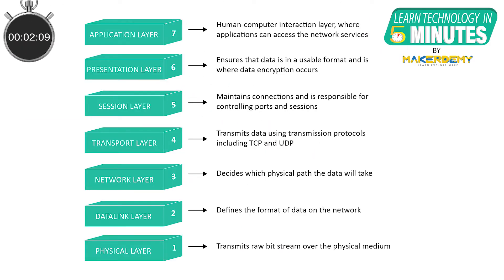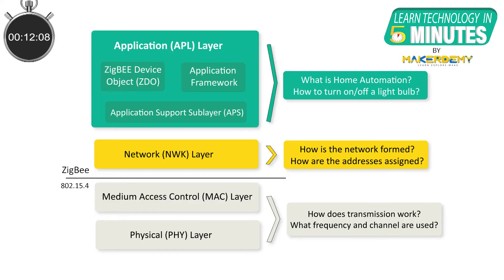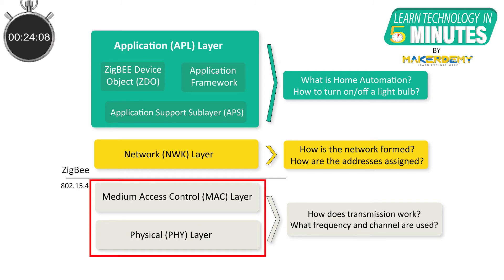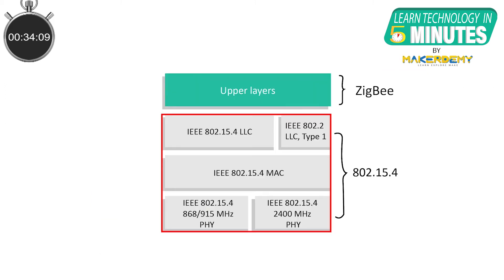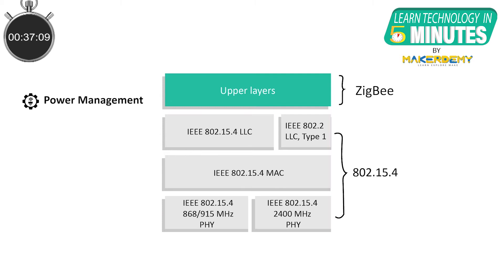Most of the network protocols use the concept of layers to separate different components and functions into independent modules that can be assembled in different ways. The Zigbee protocol is built on top of the IEEE's physical radio specification 802.15.4. The whole Zigbee protocol stack consists of four layers as shown here, in which the physical layer and the medium access control layer are defined in the IEEE 802.15.4 standard.